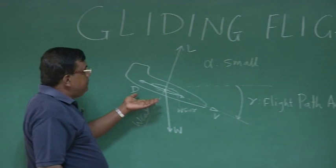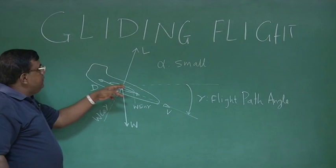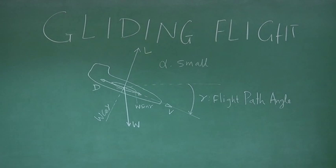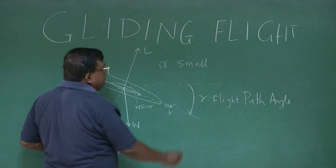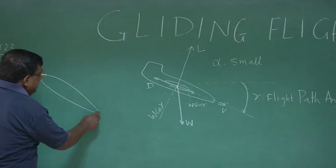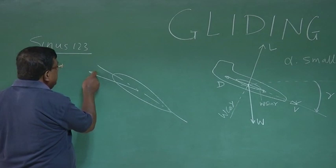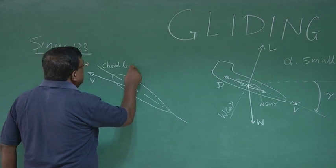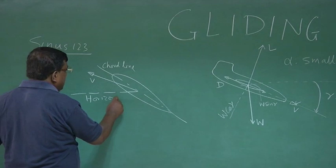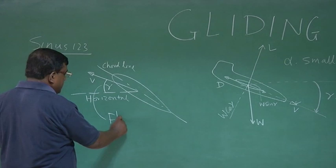Look at this diagram. This is the aircraft or more specifically, now we will call it a glider, which is descending. This is the velocity vector, this angle gamma is called the flight path angle. And if we recall, we define three angles.